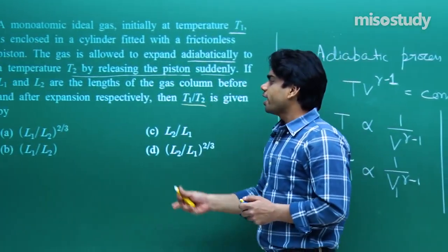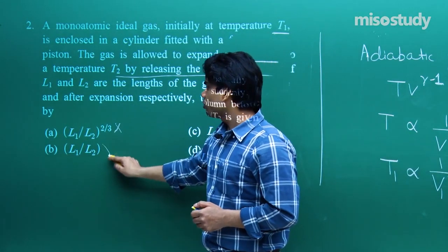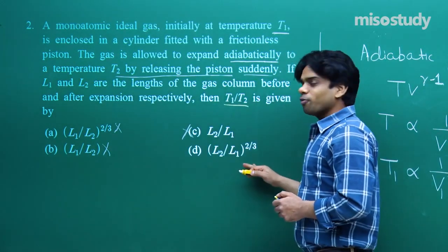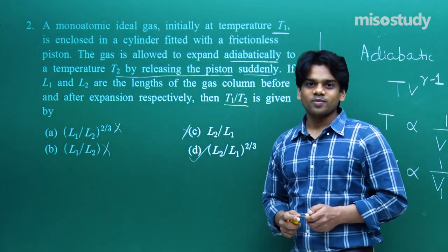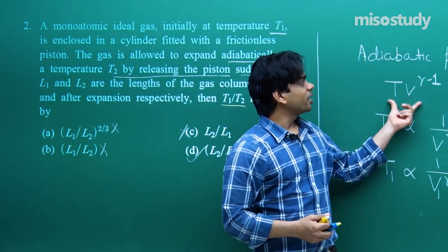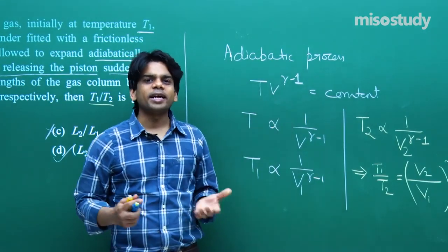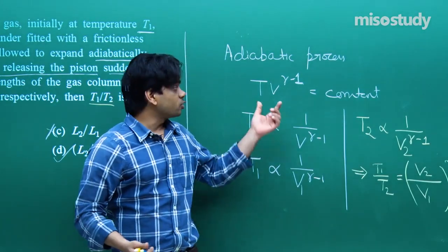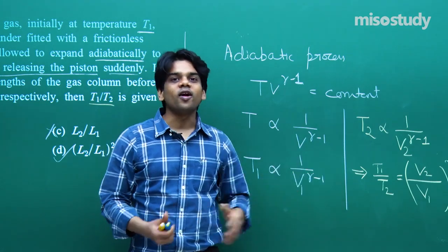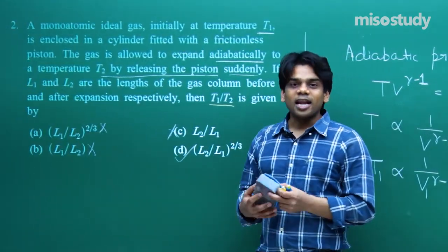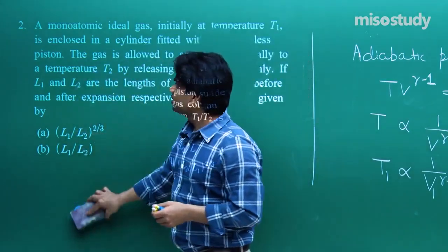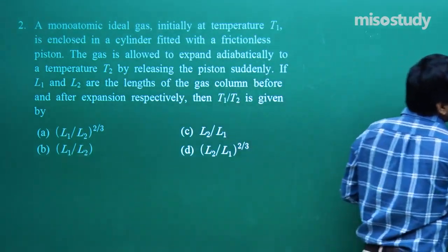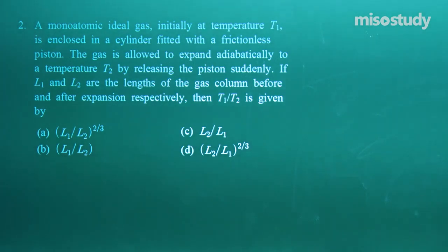Checking the options: L1/L2 is not correct; L2/L1 without the power is not correct; option D, (L2/L1)^(2/3), matches our result. This is a good question because you might be confused about which adiabatic equation to use. From PV^γ = constant you can derive TV^(γ−1) = constant and proceed to find T1/T2.